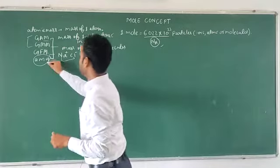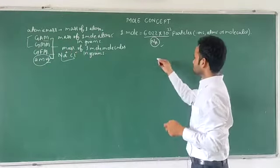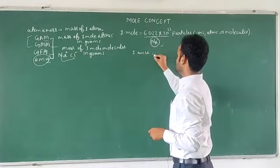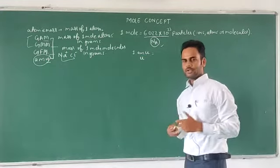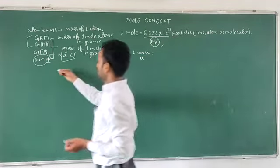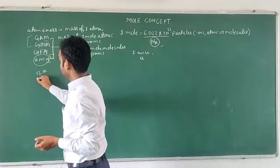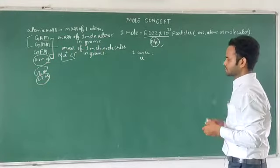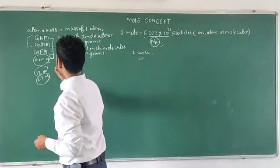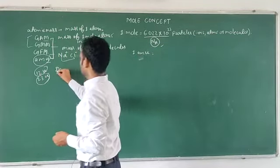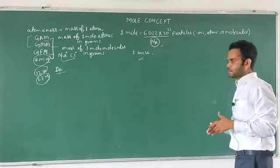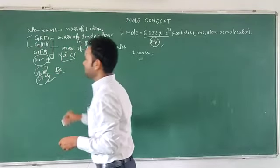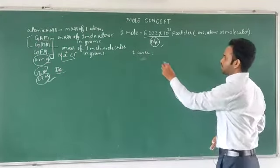Now let us talk about atomic mass unit — 1 AMU. It is also written as U, that is unified unit. Generally we write like: the mass of carbon atom is 12U, mass of sodium atom is 23U. And sometimes we also write it in the honor of John Dalton as Da — like 12 Dalton, 13 Dalton like this. But we generally use the unified unit U, that is one atomic mass unit.